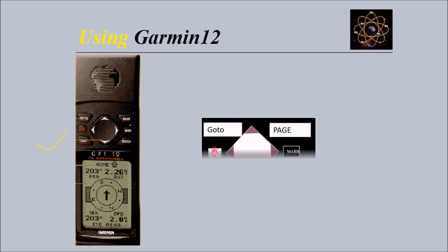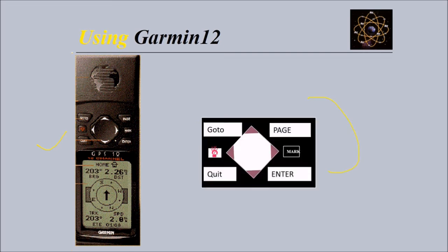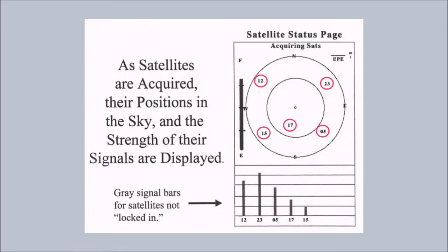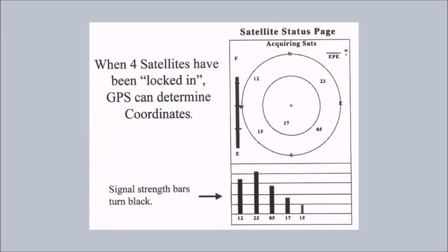This is how we use it. We have various options: go to page, quit, enter - four options as you can see here. You can scroll with keyboard, cycle through different pages, switch on and off, save a waypoint. As satellites are acquired, their positions in the sky and the strength of their signals are displayed on the screen. Gray signal bars are for satellites which are not locked in. This is the satellite status page, and when four satellites have locked in, the GPS can determine the coordinates. Before that it will not be able to do it.